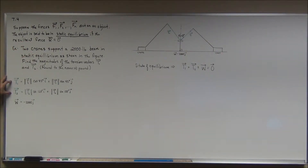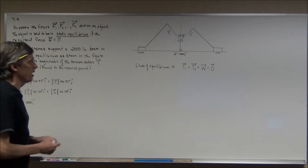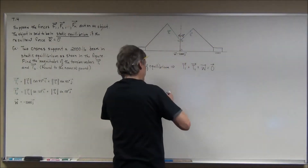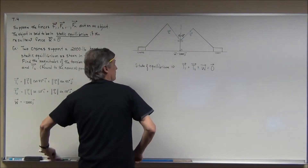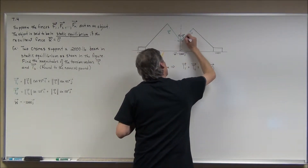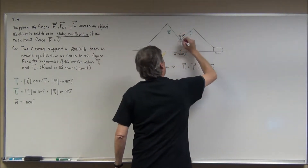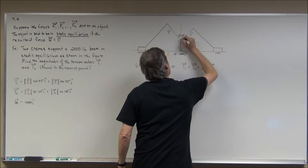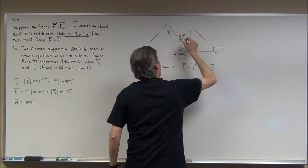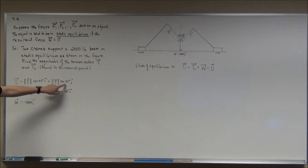The two tension vectors — we don't have the magnitudes, but we'll list those as magnitude T sub 1 times the cosine of 45 degrees. From the positive direction of the horizontal, this one is 45 degrees, and for the second tension vector that would be 90 plus 30, so 120 degrees. That's where these angles come into play.